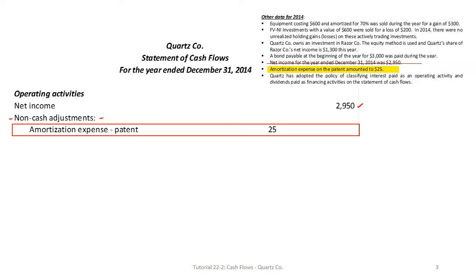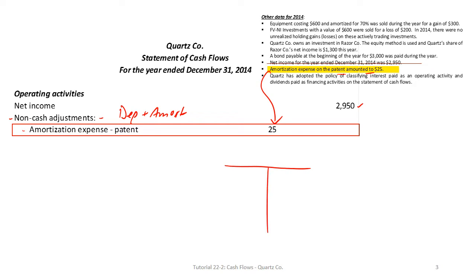Once we identify net income, we have a section for non-cash adjustments — basically any adjustments to net income for items not actually exchanged for cash. These would be non-cash revenues and expenses, or non-cash gains and losses. Conventionally we begin with depreciation and amortization expense. In this question we are told that the amortization expense on the patent amounted to $25, so we put that right in.